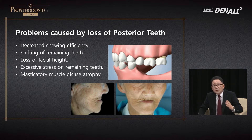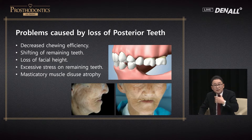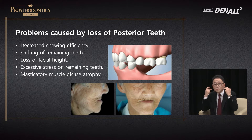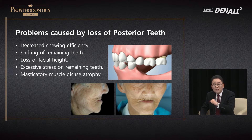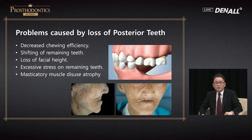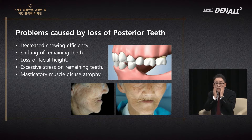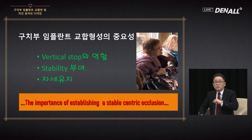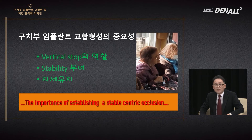My point is that with the loss of posterior teeth, masticatory muscle disuse atrophy occurs, making the cheeks slim. Those with squared jaws receive Botox injection in the masticatory muscle to look slim. For example, if there is a mandibular fracture with intermaxillary fixation for a long time, the cheeks would become sunken. This demonstrates the importance of providing posterior implant occlusion.